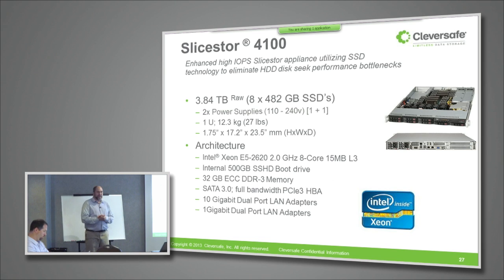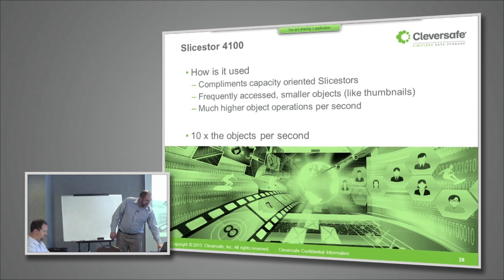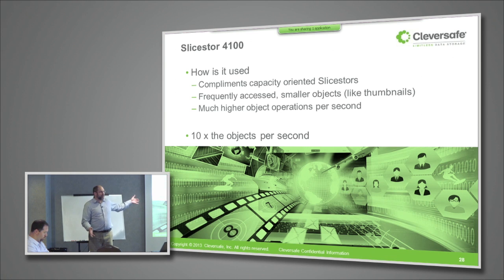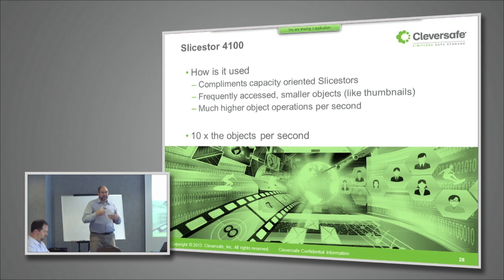Here are some specs on the Slice Store 4100. It's all SSD-based and a 1U server. It's intended to be used in a complementary manner to the higher-capacity slice stores — we don't envision someone having a DSNet of all 1U SSD slice stores. It's more intended to complement the high-density, high-capacity slice stores in a separate storage pool to handle the part of the workload that involves frequently accessed smaller objects. In terms of objects per second, it delivers about ten times more objects per second — an order of magnitude increase compared to the higher-capacity slice stores — which makes all the difference in being able to support this kind of workload within the DSNet.